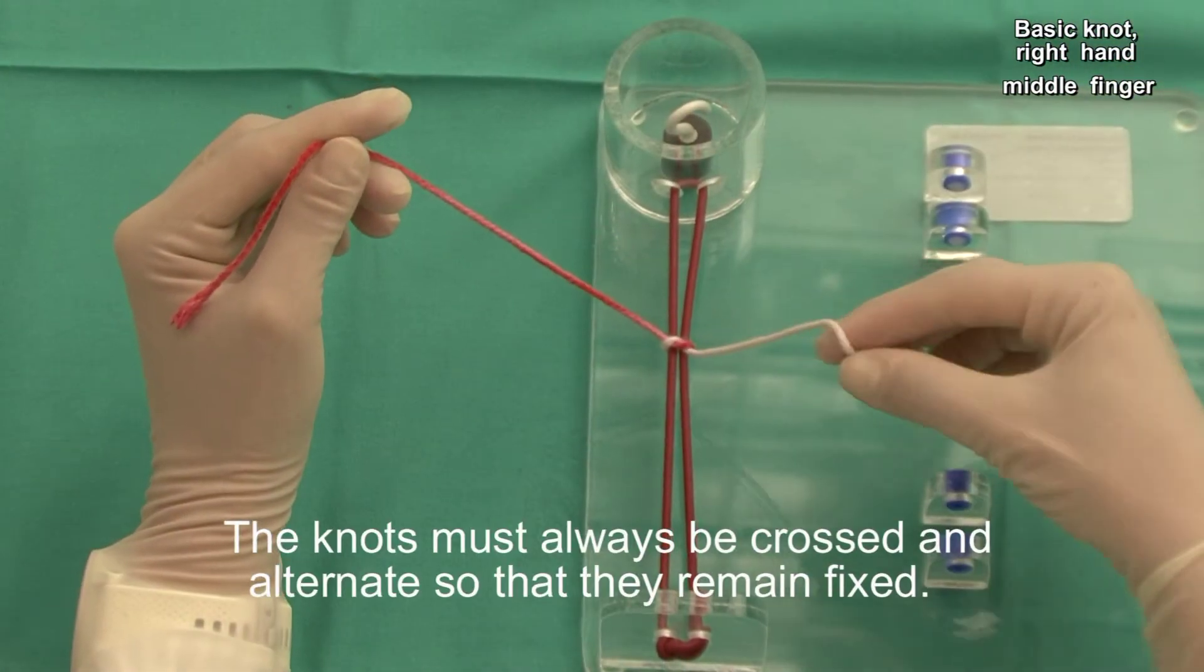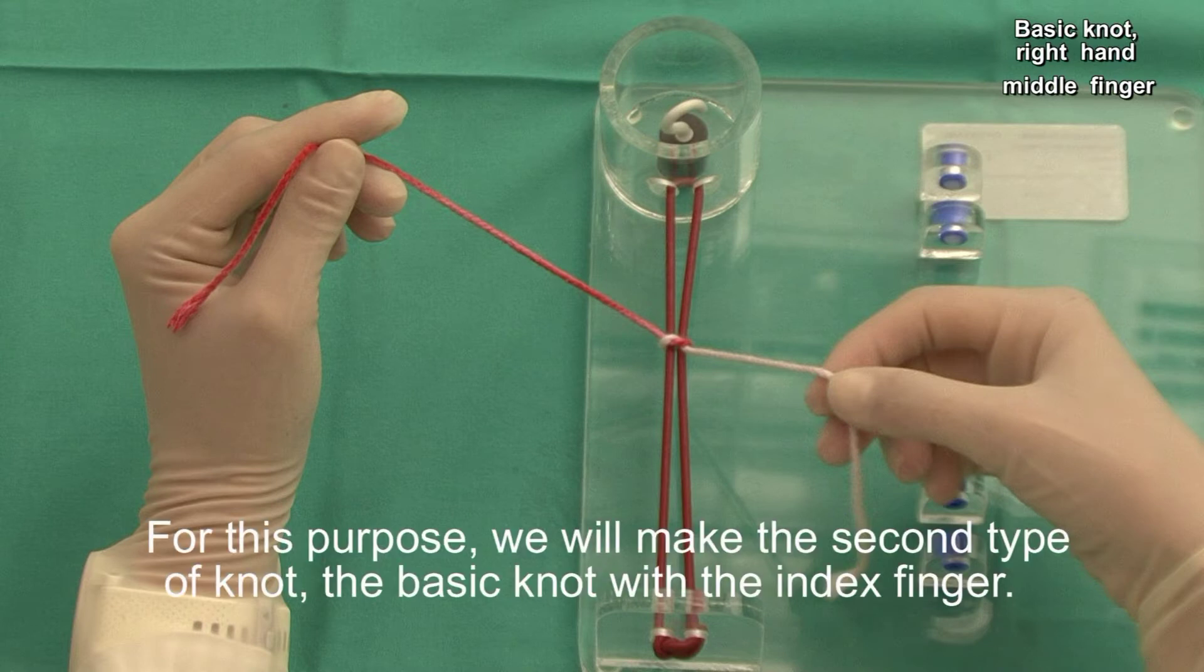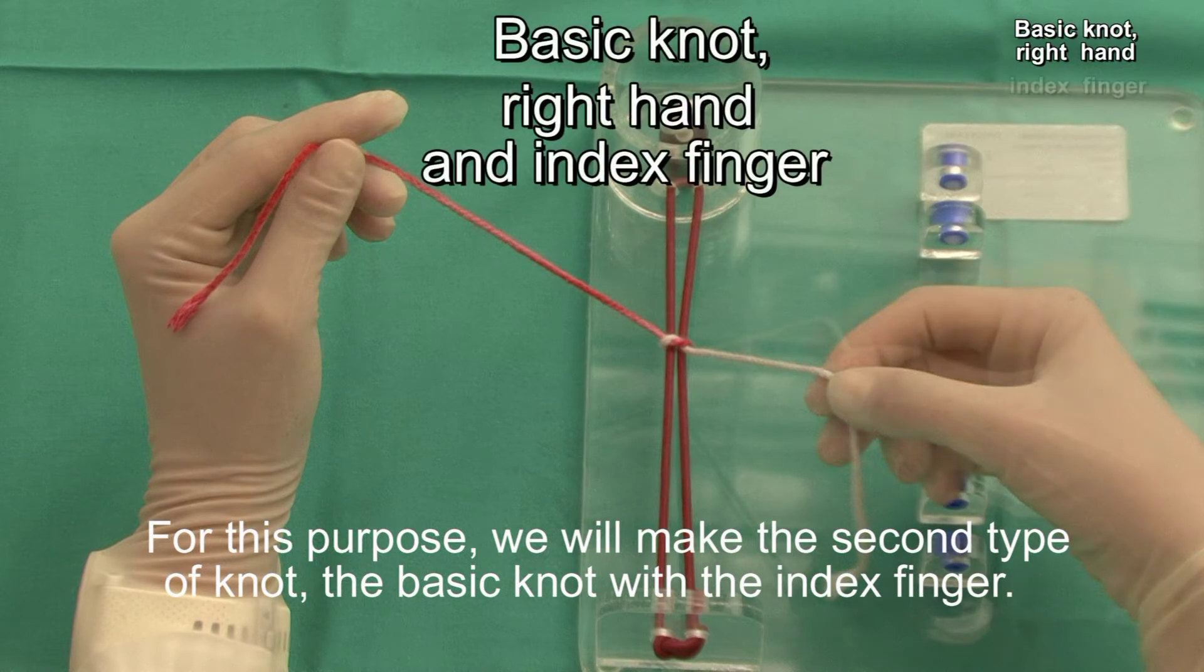The knot must always be crossed and alternated so that they remain fixed. For this purpose, we will make the second type of knot, the basic knot with the index finger.